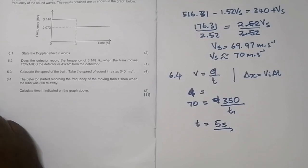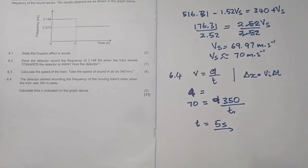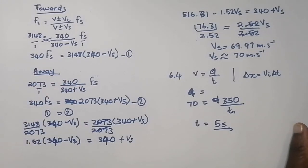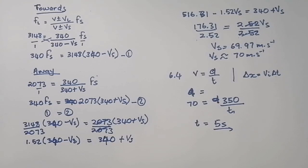That's the full question — 11 marks in total. The Doppler effect is a section where you can score well, so make sure you maximize it. For those who didn't know how to work out simultaneous equations, now you do. Study hard, tell your friends, and subscribe to the channel. See you next time!